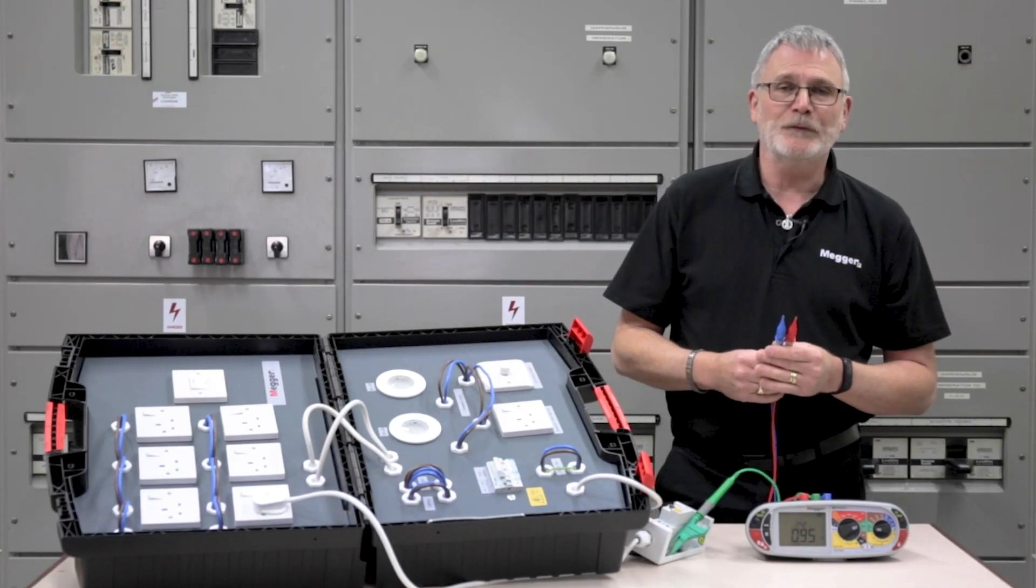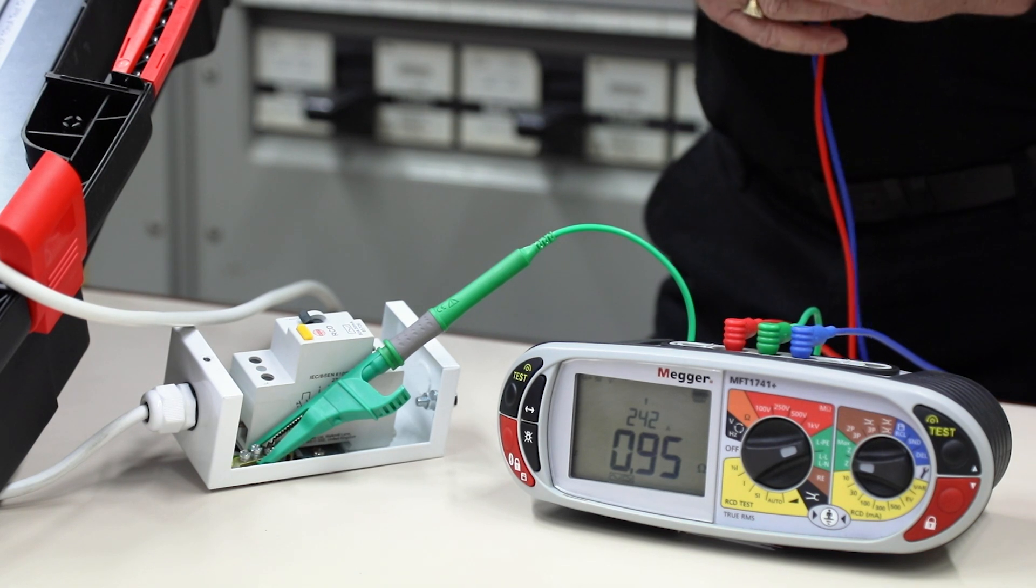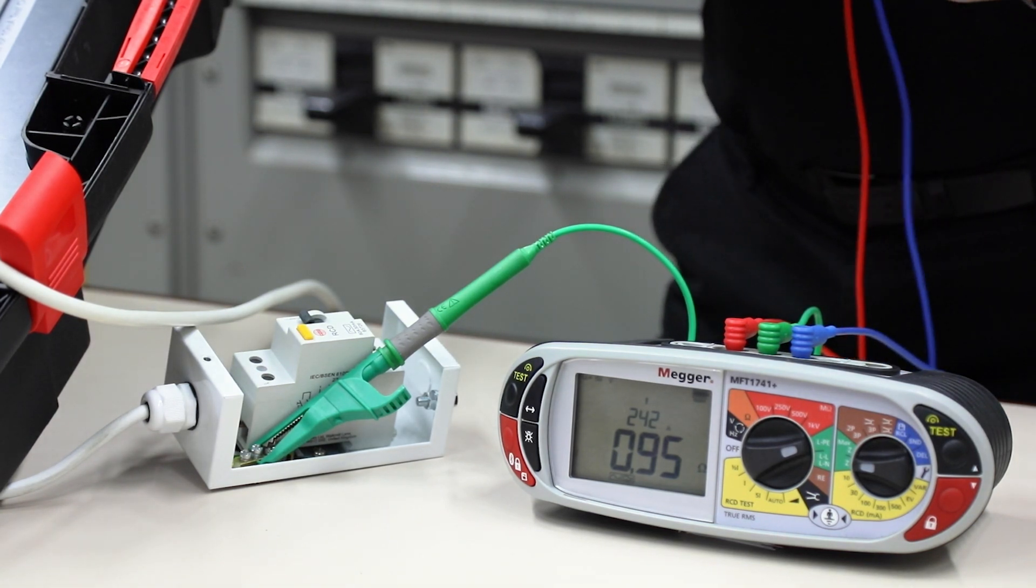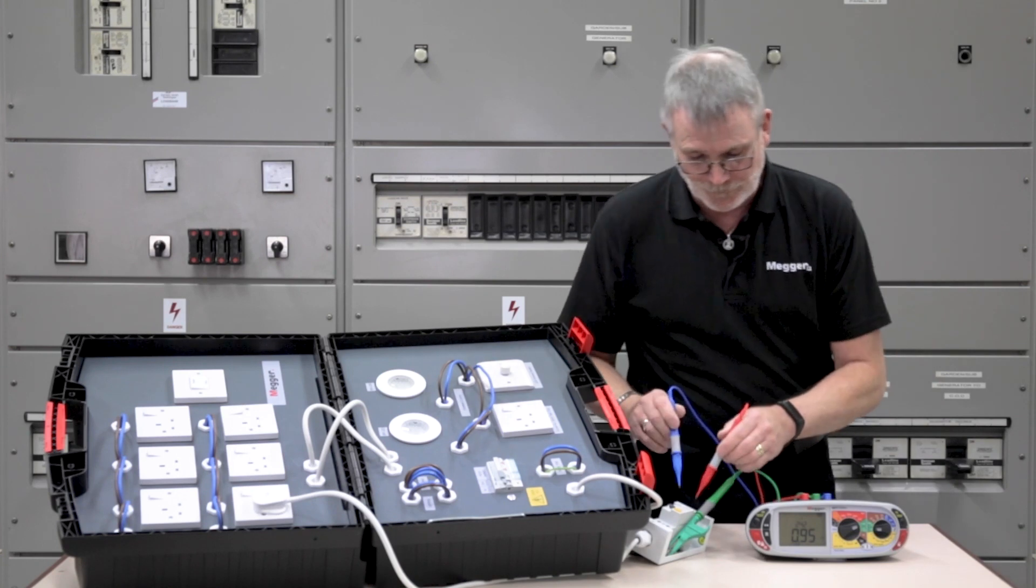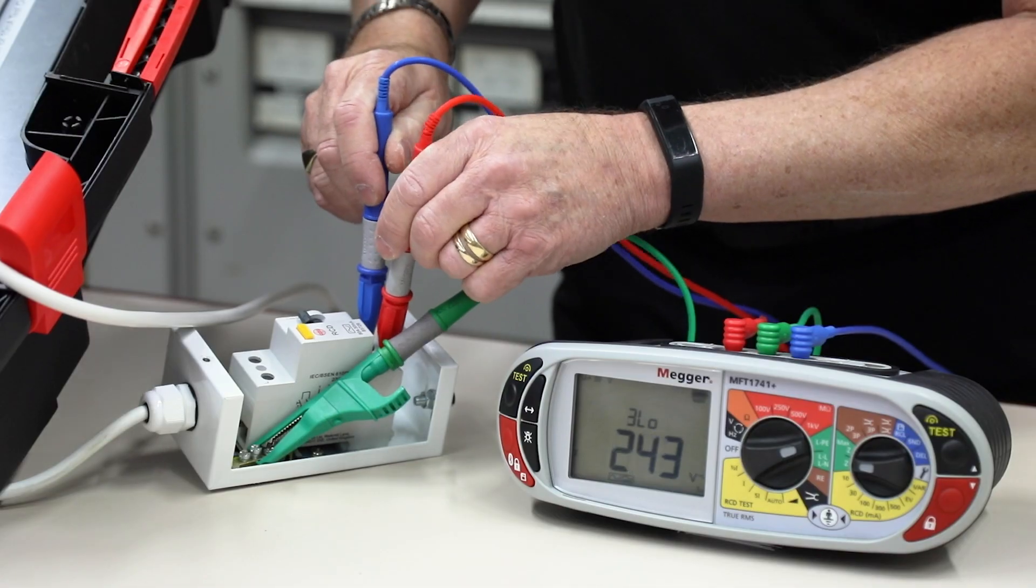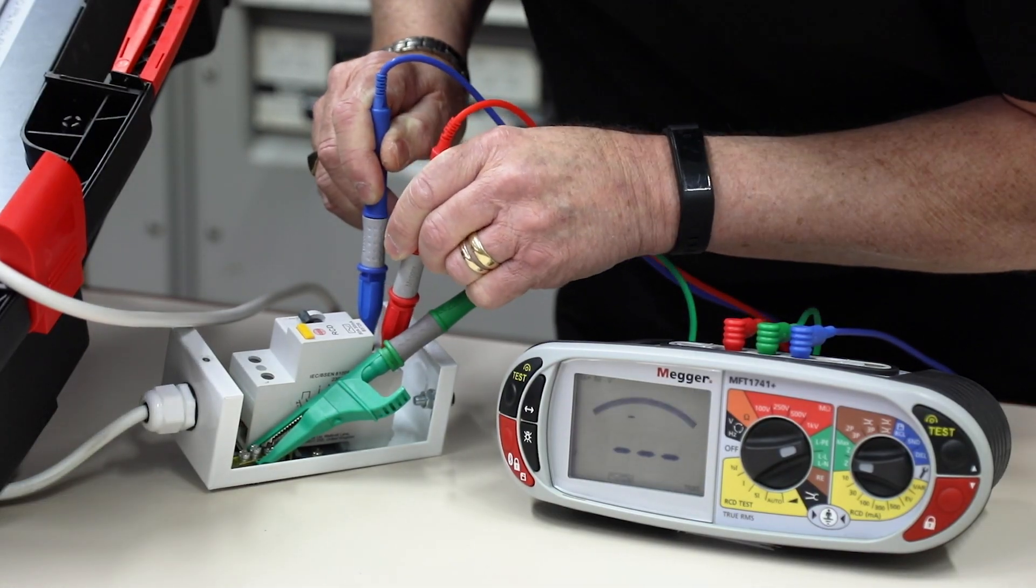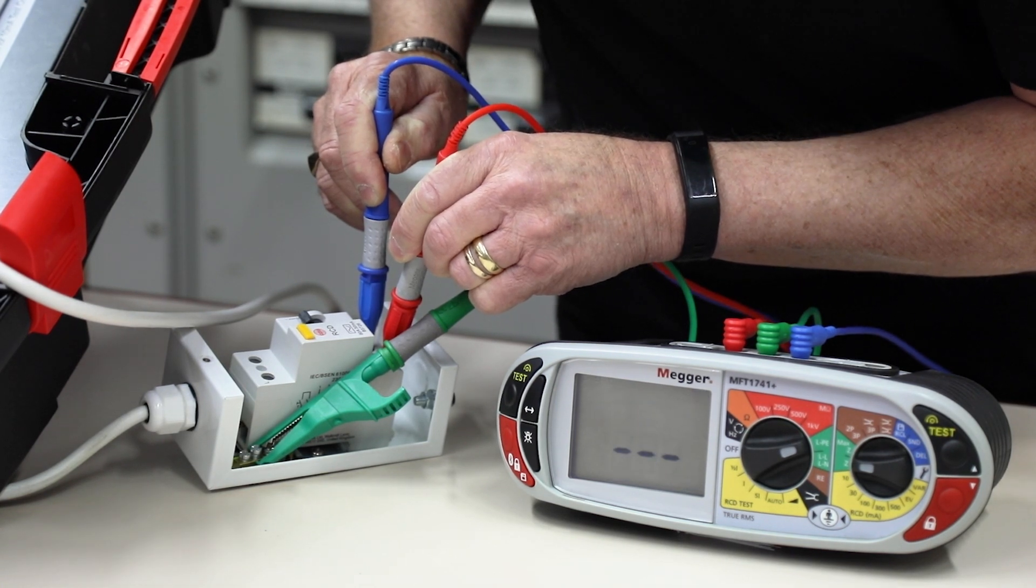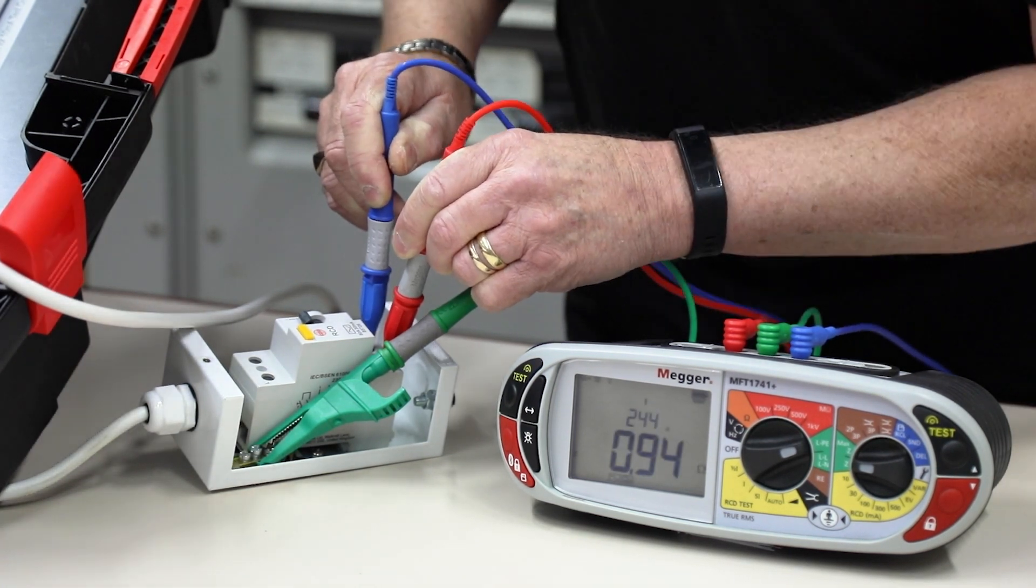The MFT 1741 and 1741 plus have a new algorithm that doesn't cause the impedance uplift across the RCD. So if we take the reading at the bottom, you'll see a reading of 0.94 of an ohm.